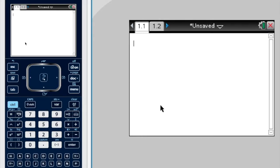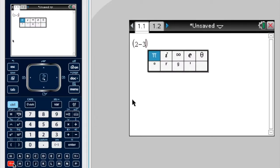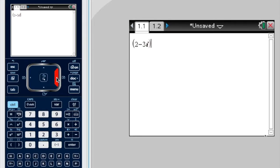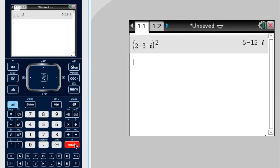So now, let's say I have the complex number 2 minus 3i, and I want to square it. So let's do brackets, 2 minus 3i, get out of the brackets and just square it, enter.